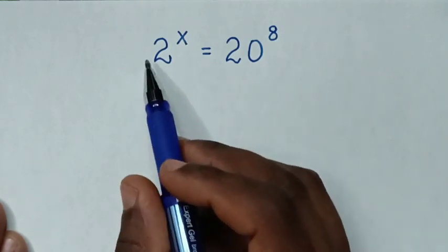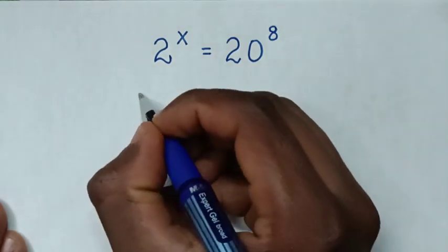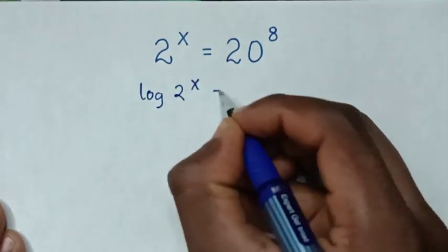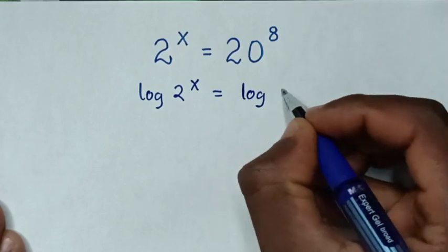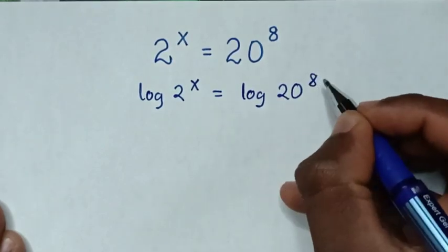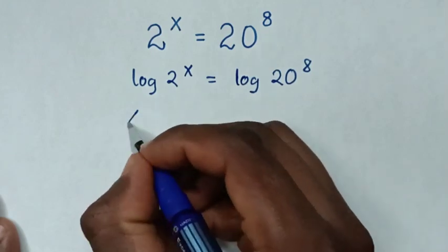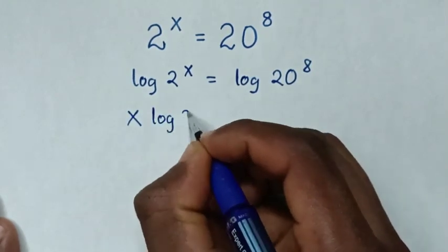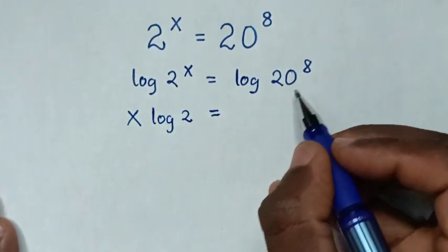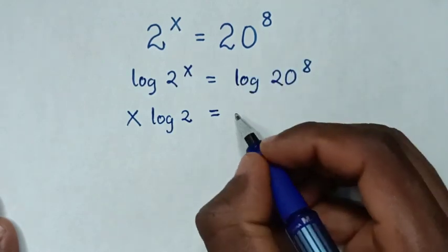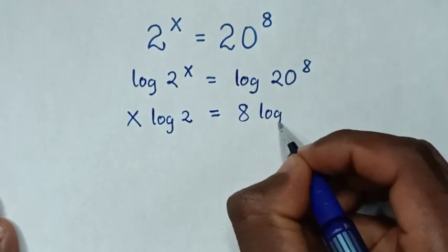So first we'll apply log to both sides. Then it will be log of 2 power x is equal to log of 20 power 8. Then this power x will move to the base, so it will be x log of 2 is equal to power 8 will move to the base, it will be 8 log of 20.